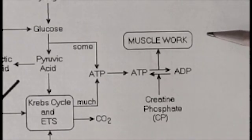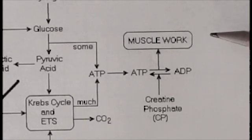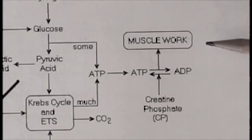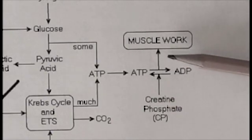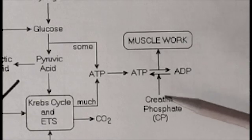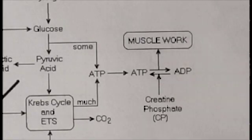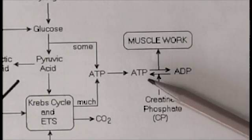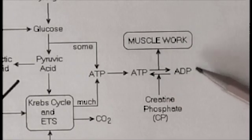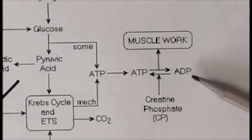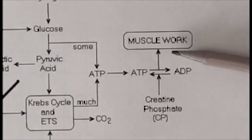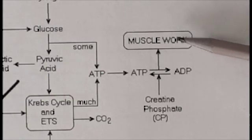These ATP-requiring processes include binding of the crossbridge, bending of the crossbridge, pumping calcium back into the lateral sacs, and releasing the crossbridge, and so forth. The ATP found in the muscle splits and hydrolyzes into ADP, and this supplies the energy for the muscle work.